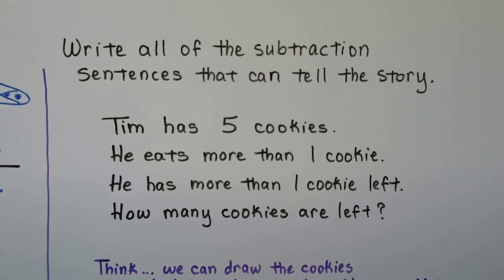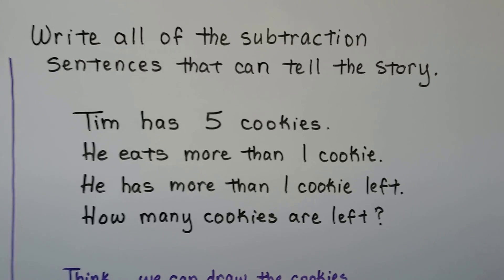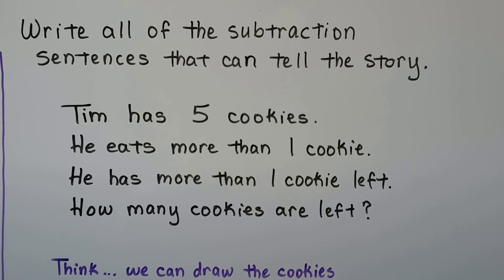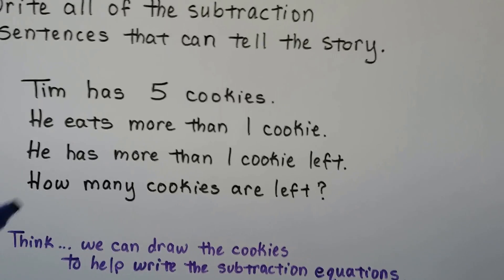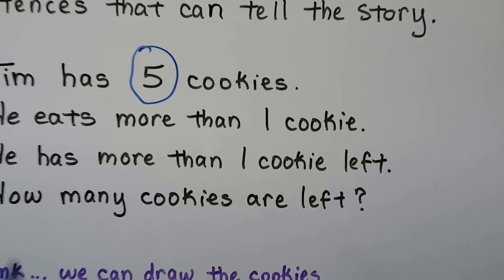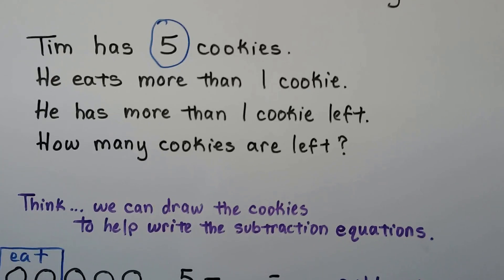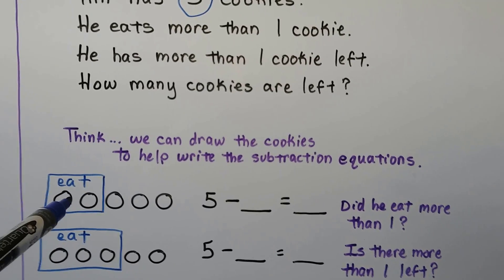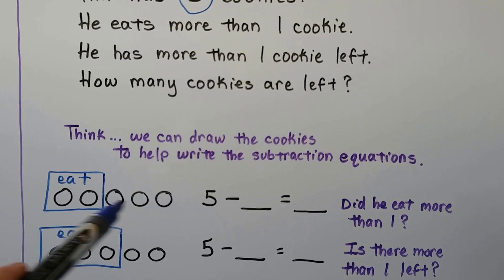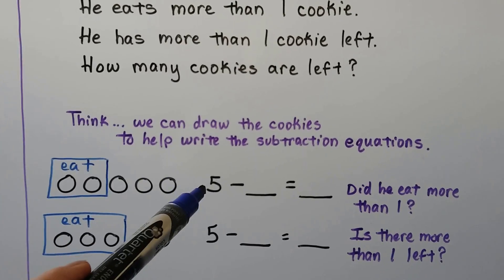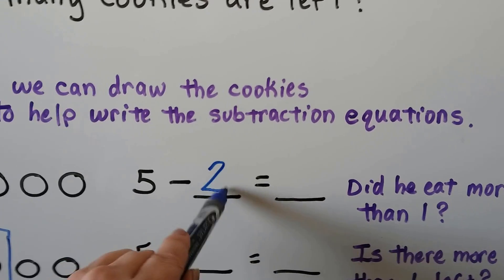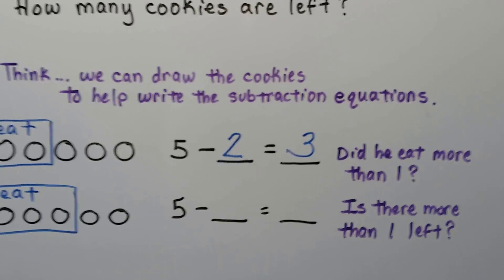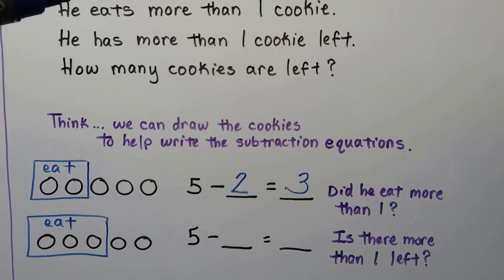We can write all of the subtraction sentences that can tell the story. Tim has five cookies. He eats more than one cookie and has more than one cookie left. How many cookies are left? We can draw the cookies to help write the subtraction equations. If he eats two — that's more than one — and there are three left — that's more than one — so five minus two equals three.